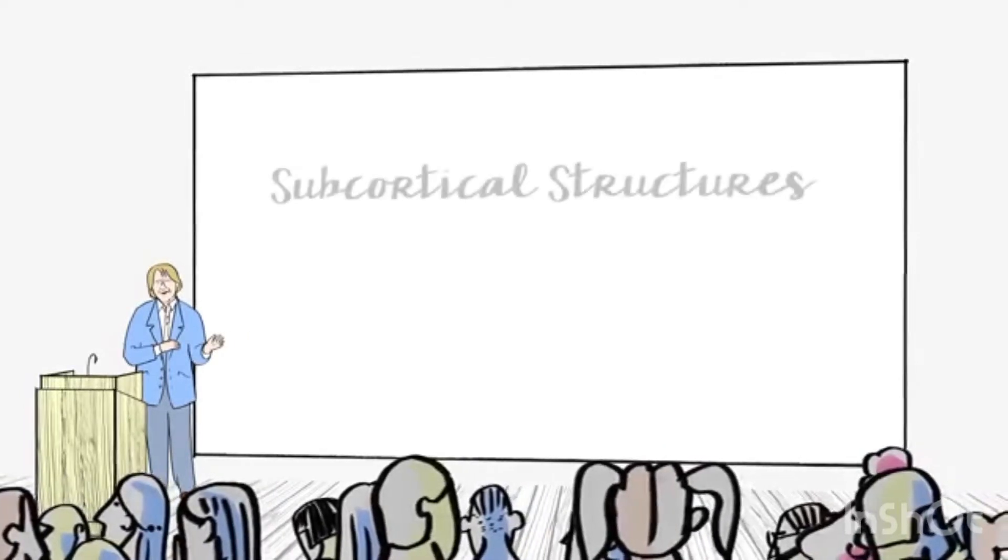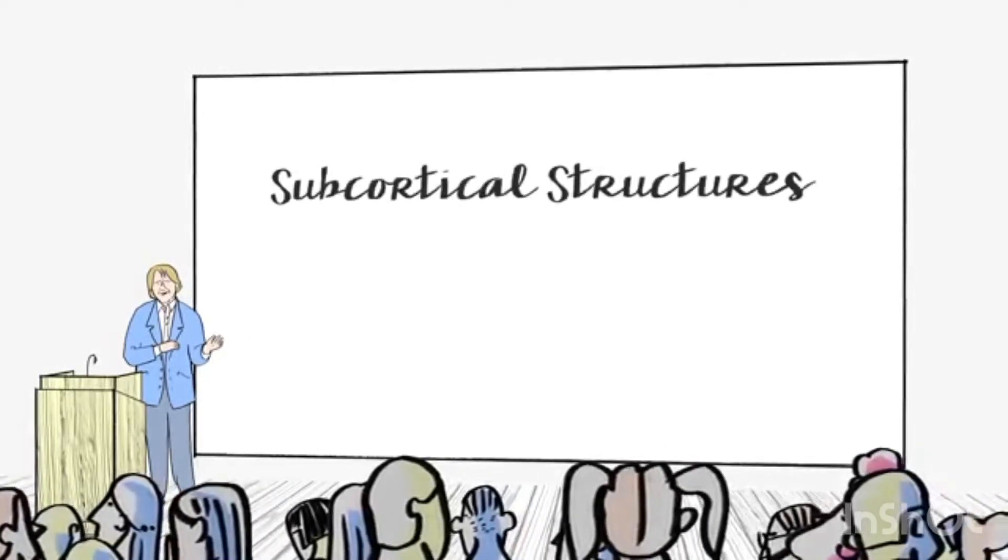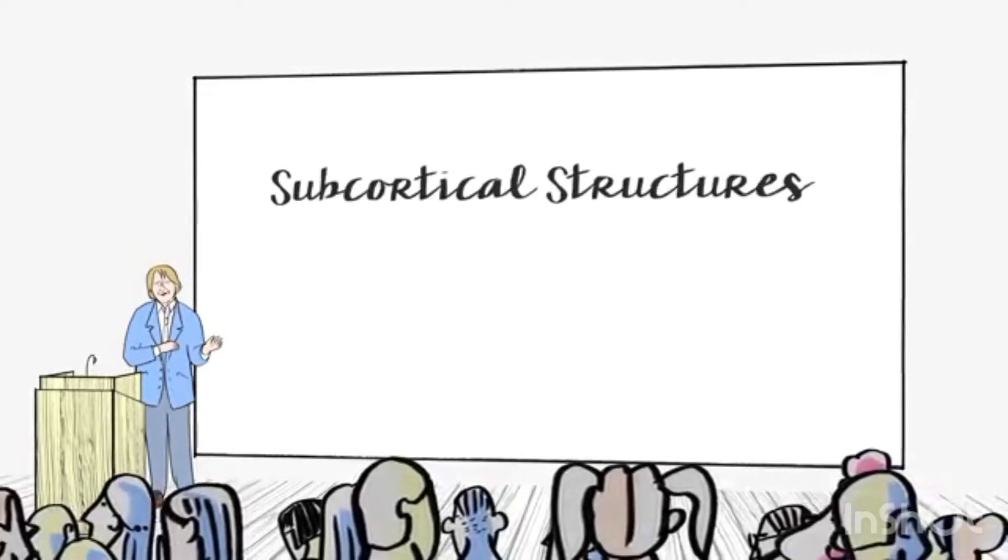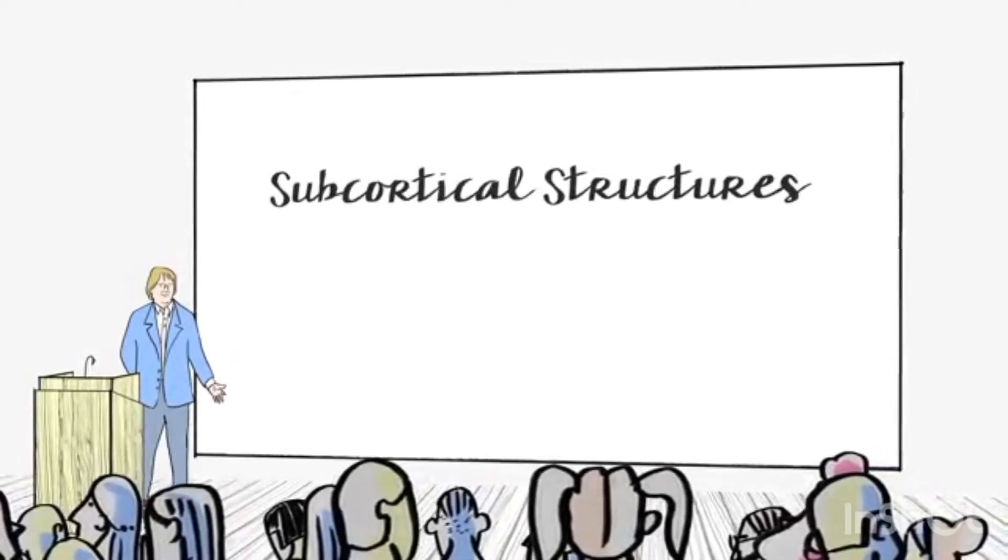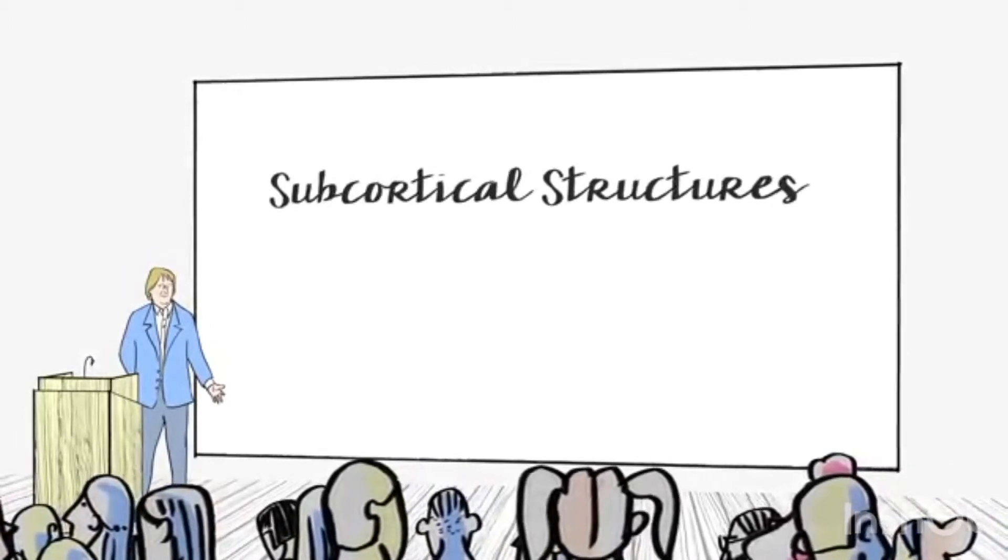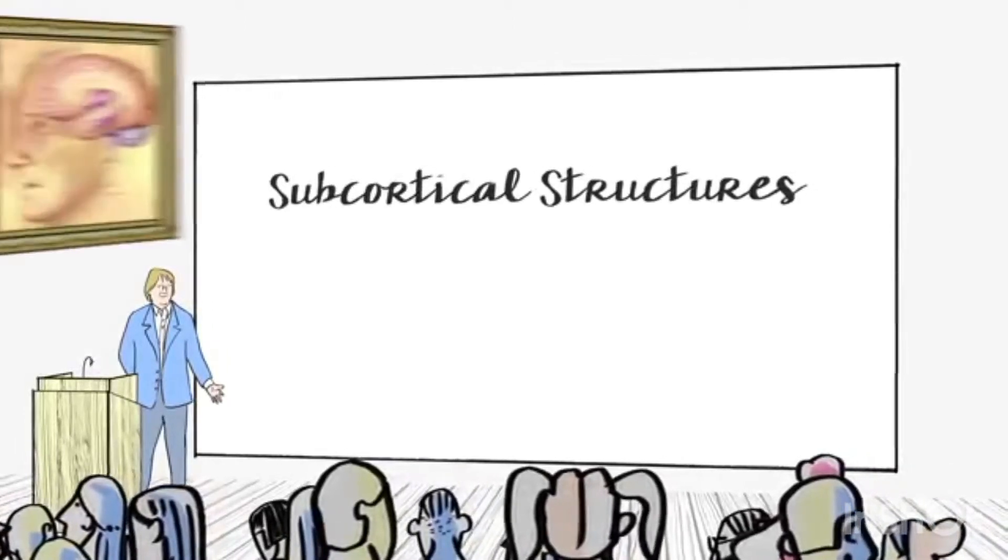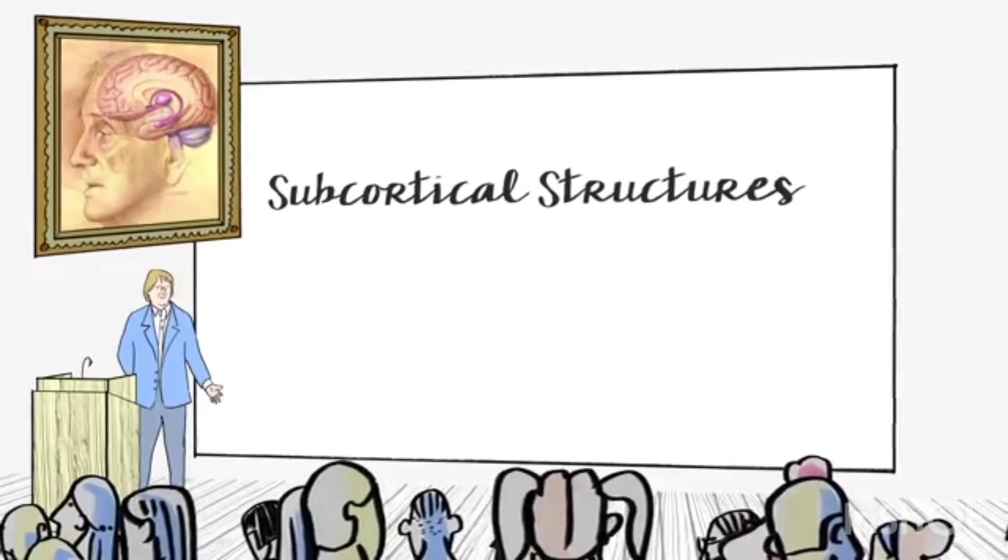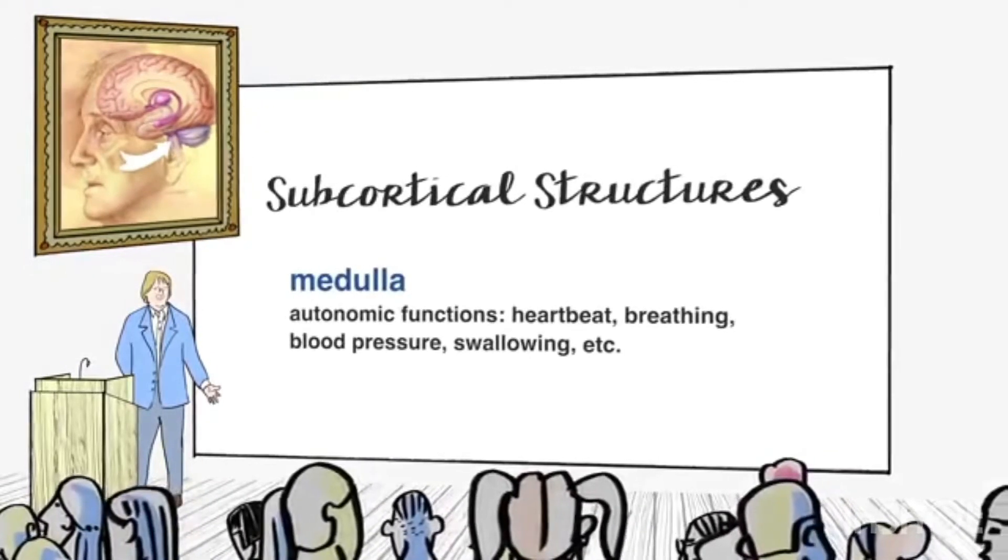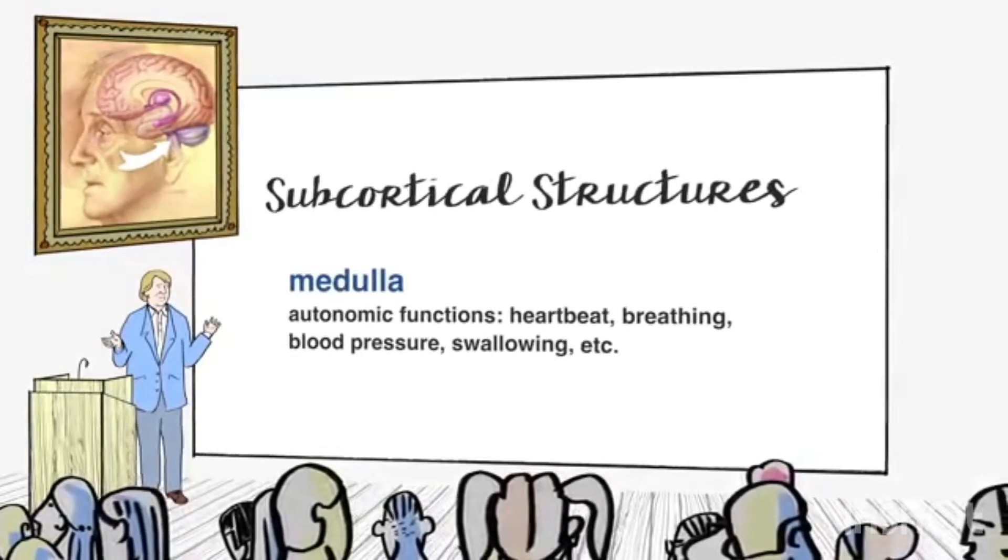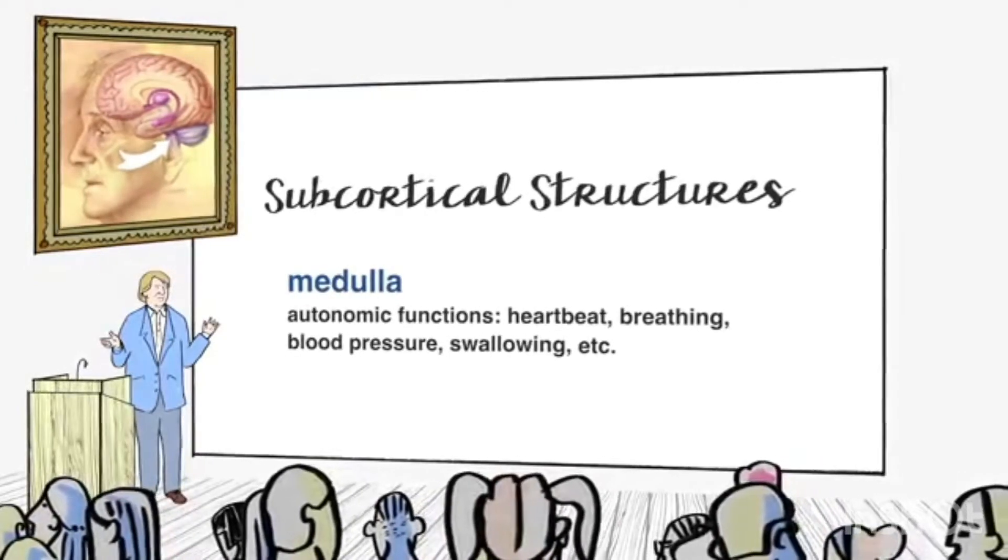This includes parts of the brain like the medulla, which controls automatic functions like your heart rate, your blood pressure, swallowing, and so on. It includes the cerebellum with involvement in body balance and motor coordination. It consists of about 30 billion neurons.